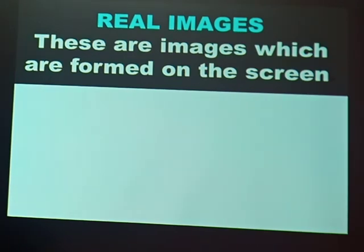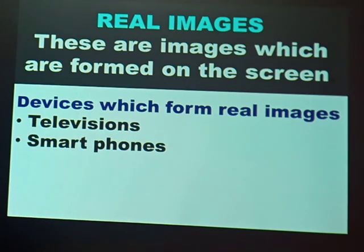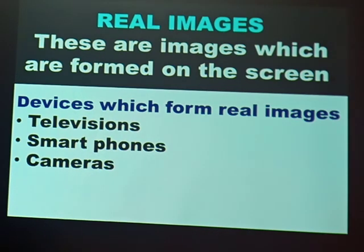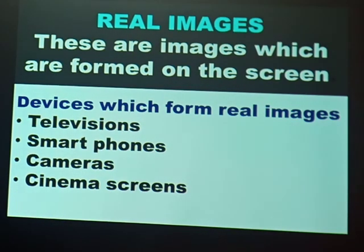When we talk about real images, we are talking about images which are formed on televisions. We are also talking about images formed by smartphones — when you use your mother's or father's smartphone to take a picture of yourself, that image formed is a real image. We also have images formed by cameras and images formed by cinema screens.